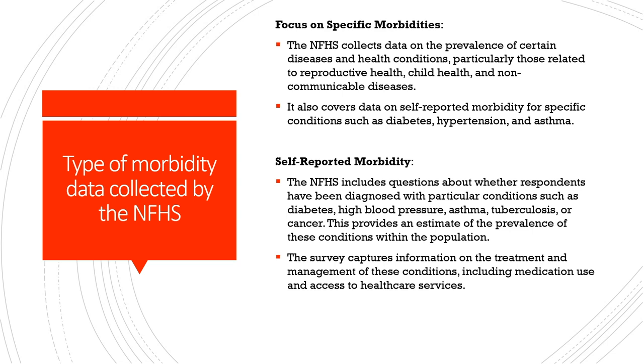The NFHS includes questions about whether respondents have been diagnosed with particular conditions such as diabetes, high blood pressure, asthma, tuberculosis, or cancer, providing an estimate of the prevalence of these conditions. It also captures information on treatment and management of these conditions, including medication use and access to healthcare services. Like the NSSO, NFHS also provides district level information on whether patients are moving towards government or private healthcare services, giving a sense of the scale of privatization and out-of-pocket spending.